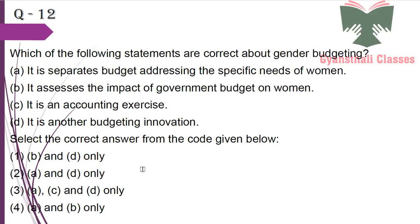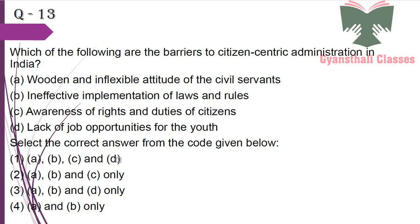Next question: Which of the following statements are correct about gender budgeting? It separates budget addressing specific needs of women — no; it assesses the impact of government budget on women — yes; it is an accounting exercise — no; it is another budgeting innovation — yes. So the answer is B and D only.